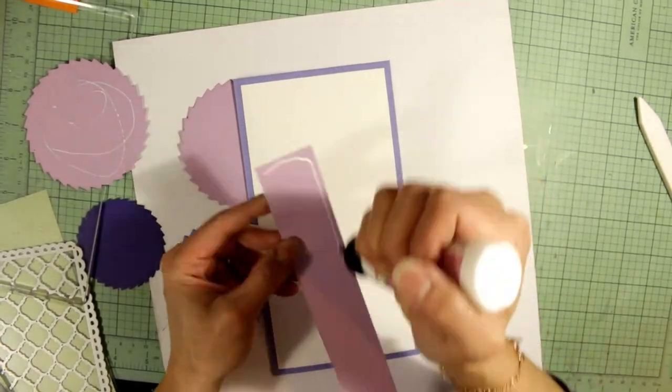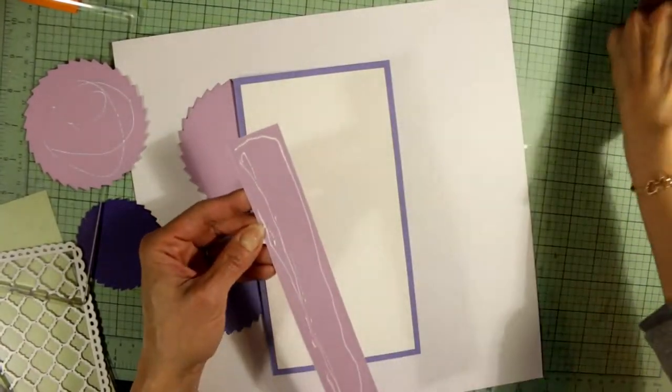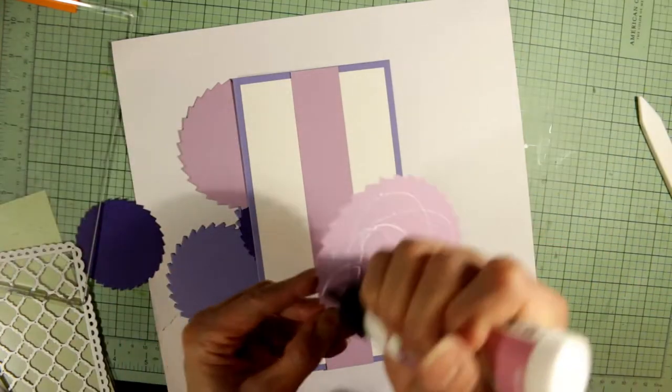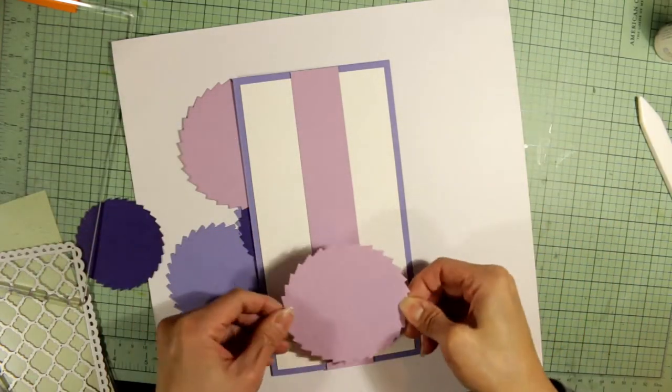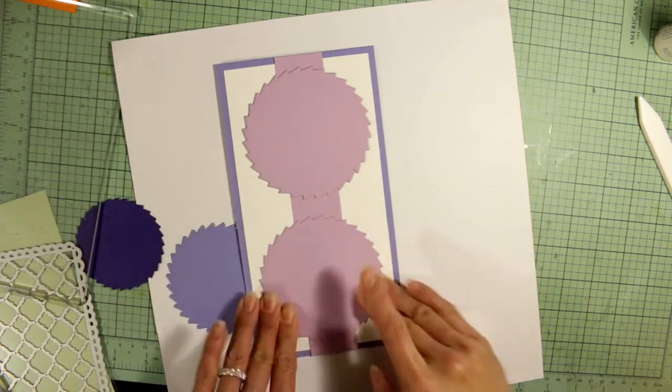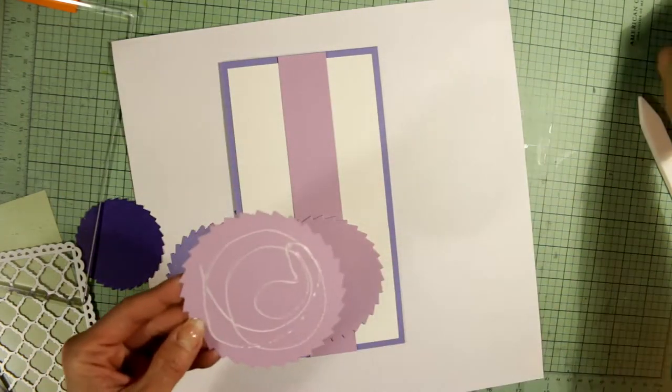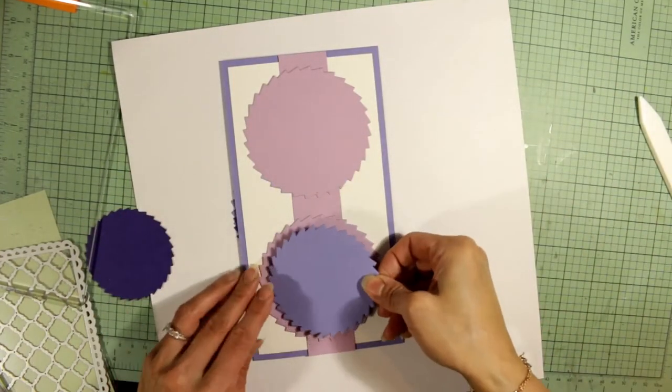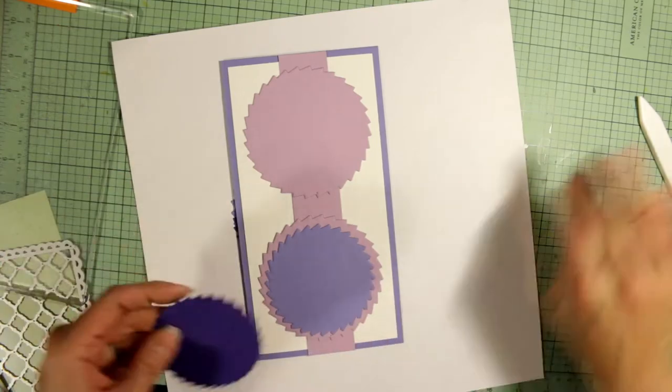I started off with a lavender or periwinkle kind of card base, put a white card front on top of it, then I put a strip of this lavender to connect the largest of these spiral circles and I'm putting two of them on because I'm going to have two focal points for the front of this card.